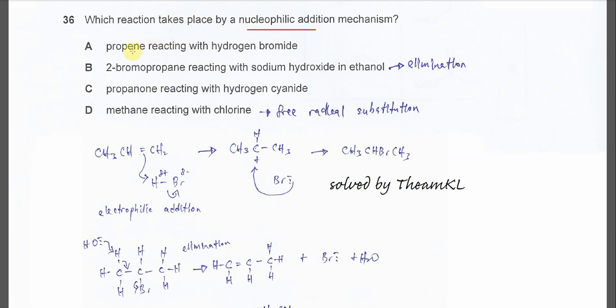For A, propene reacts with HBr. This reaction we call electrophilic addition because the HBr itself is the electrophile. It's electron deficient. It will gain the electrons from the C-C double bond. So the C-C double bond is the electron rich place.